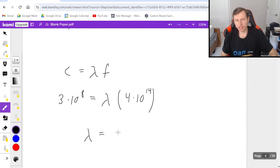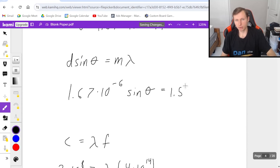So then lambda is going to end up equaling, I have to divide both sides by 4 times 10 to the 14th. And if you do it correctly, you get 7.5 times 10 to the minus 7th, and that's meters. And that's exactly what's going to go right here in my equation.